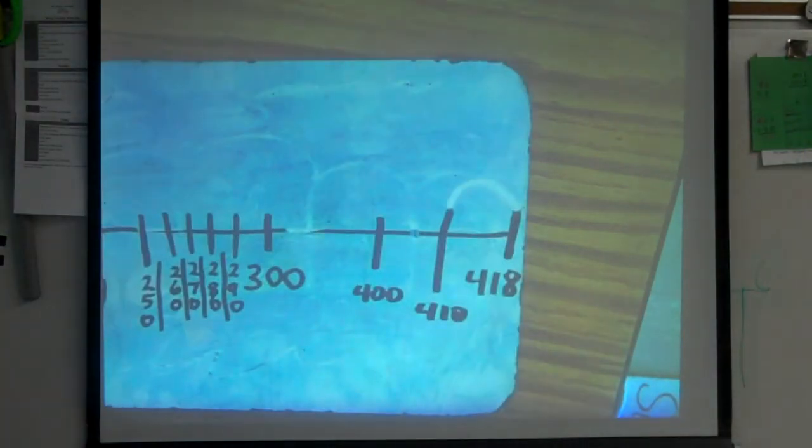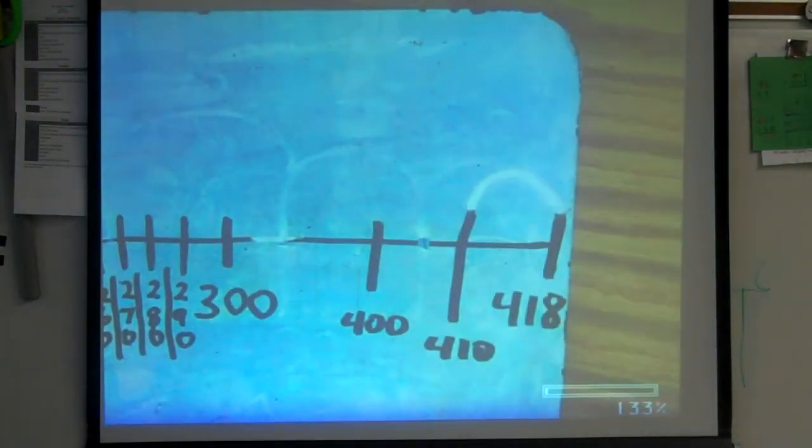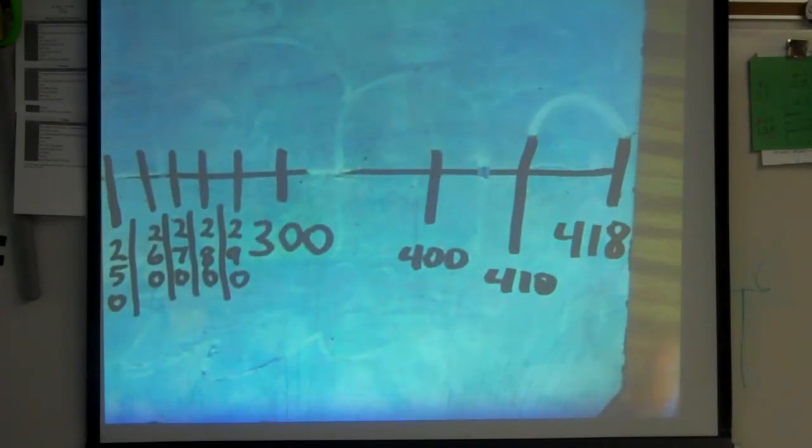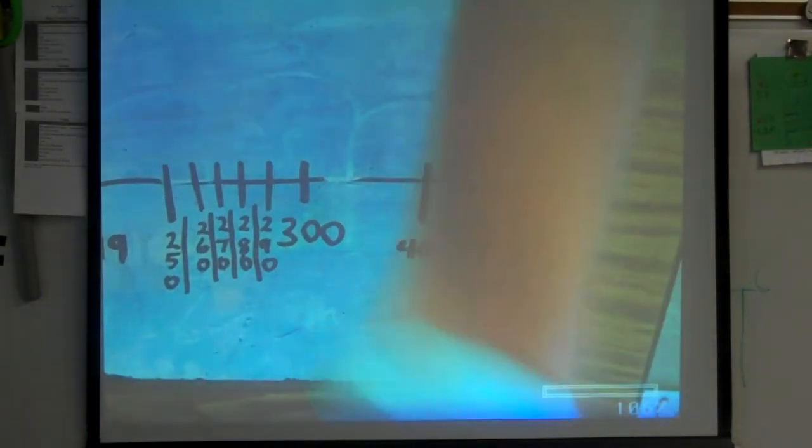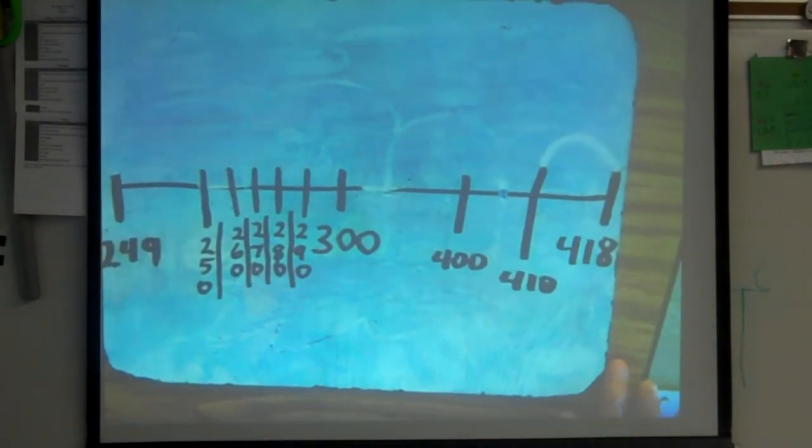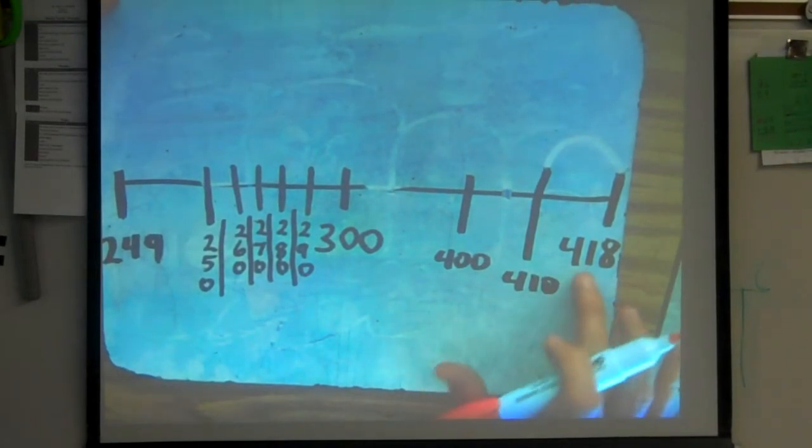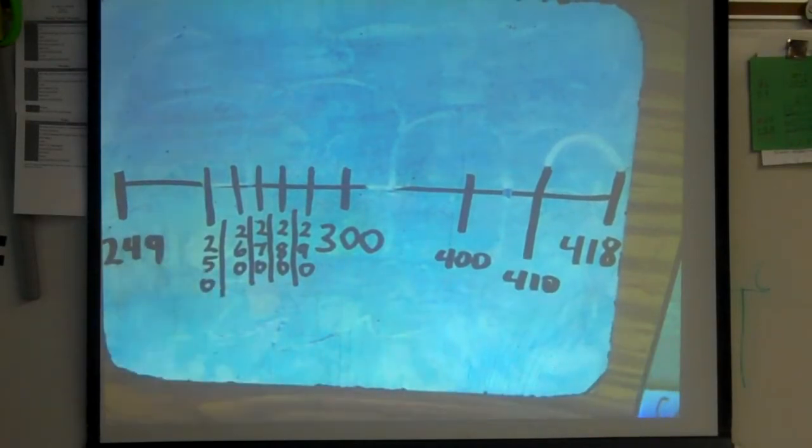The next thing that I want to do is, this really helps the visual kids that like to see the action. Now, I've already gone ahead and done some work here. If you'll bear with me, I'll explain it as we go. Now, their problem so far has been 418 subtract 249. All I've done is created a number line, 418 at the highest point, 249 at the lowest.